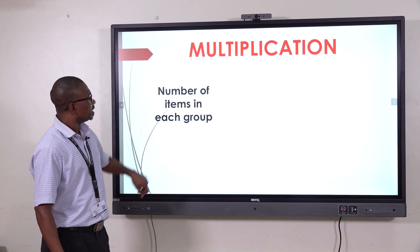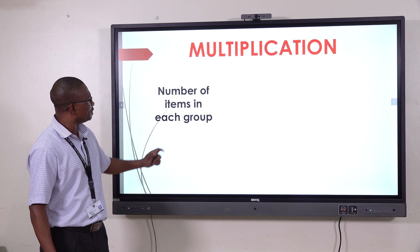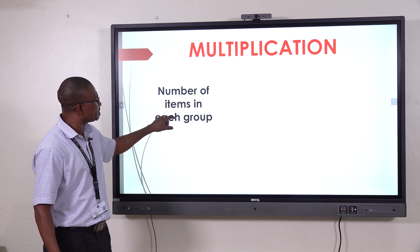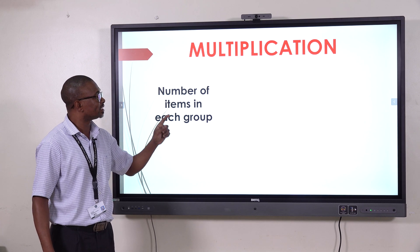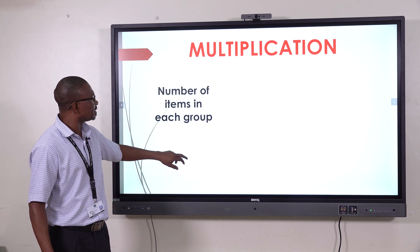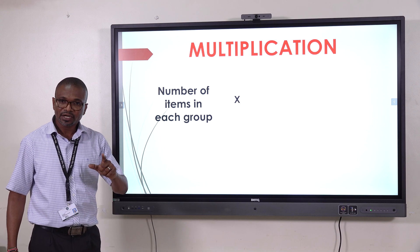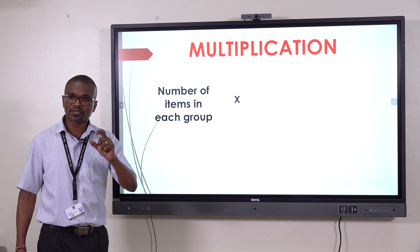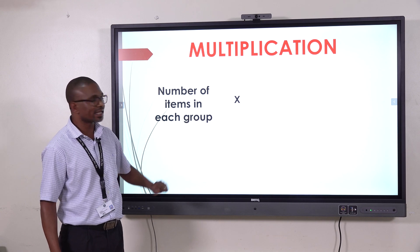Now, getting the soup of everything, number of items in each group, that one should be put into consideration. When we are dealing with multiplication, then we are having the number of items in each group. Remember, we've said at first that we are going to deal with groups and items. Then our sign, multiplication sign is there. This one will be multiplied by the number of groups.